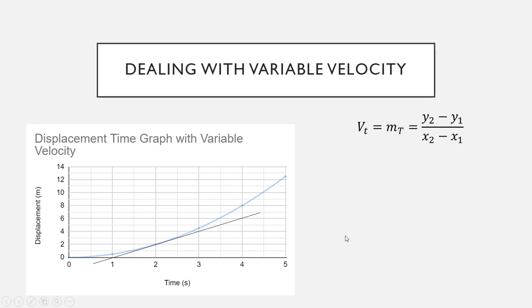Our formula is that the velocity at time t, so some specific time that we've chosen, in this case two seconds, is equal to the gradient of this tangent. And a gradient formula is simply your change in y divided by your change in x. So we're going to have two points on the line, so we can pick two points.